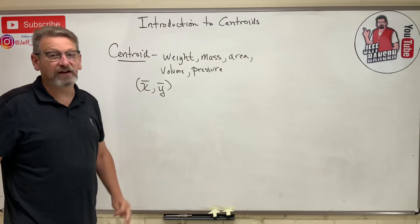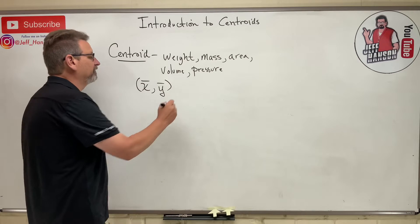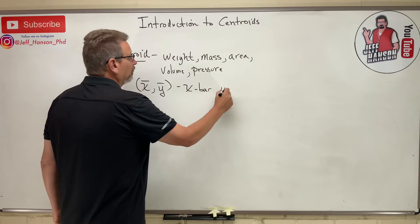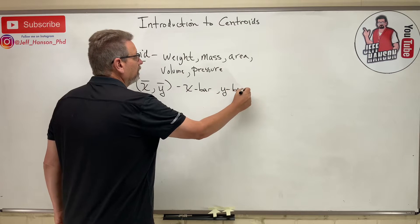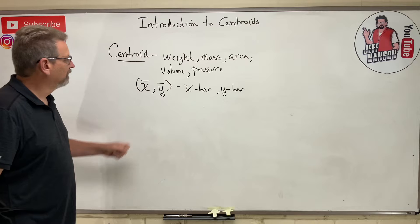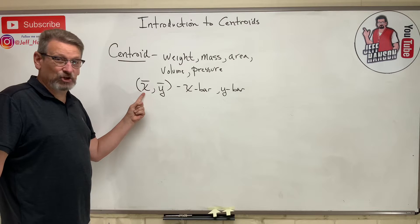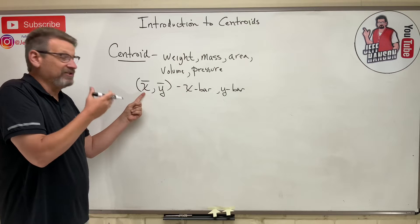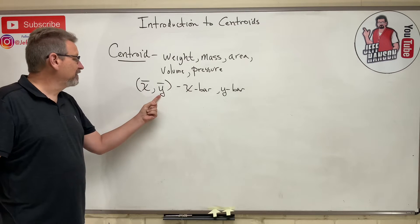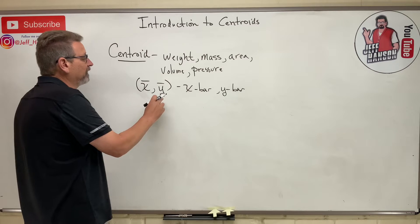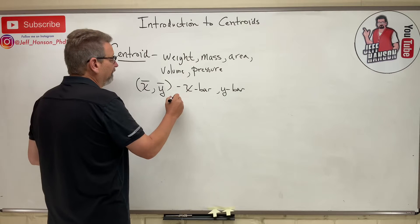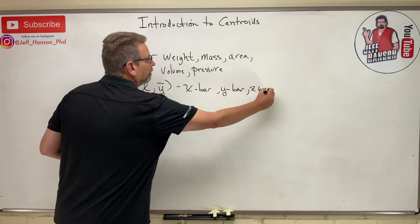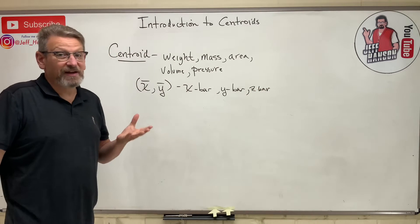We denote these coordinates with a little bar above them — cleverly called x-bar and y-bar. X-bar is the x coordinate of the centroid, y-bar is the y coordinate, and in 3D we'll also have z-bar.